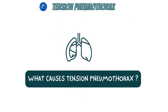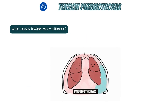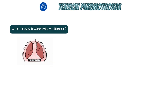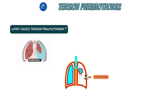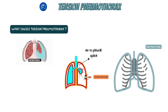What causes a tension pneumothorax? In a nutshell, air entering the pleural cavity causes a pneumothorax. This frequently occurs in trauma due to lung injury sustained directly — for example, if you have a chest wound from a stabbing, the lung is penetrated and air escapes from the lung parenchyma into the pleural space. A pneumothorax is also frequently the result of rib fractures penetrating the lung in blunt trauma cases.